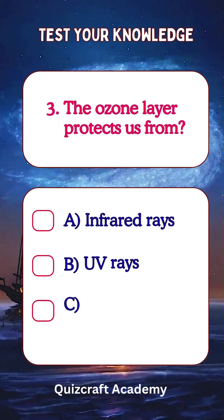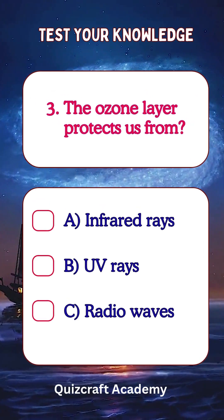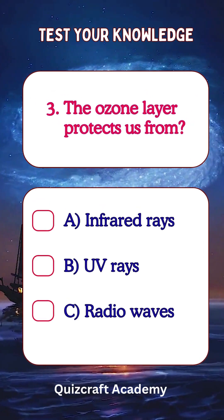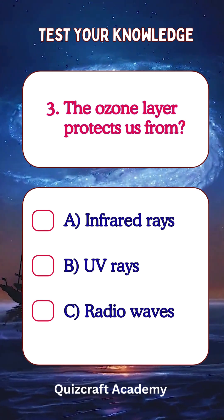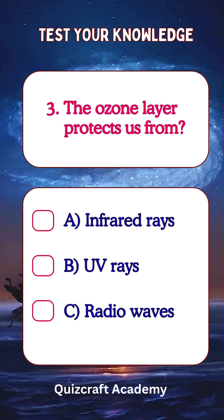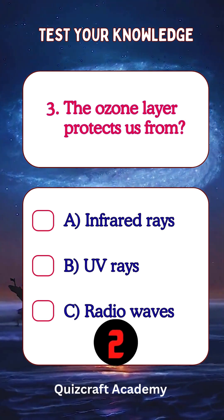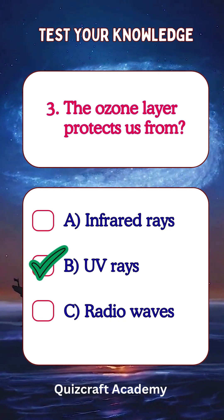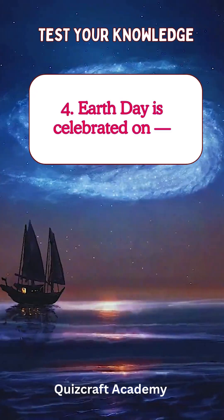The ozone layer protects us from: a. infrared rays, b. UV rays, c. radio waves. Answer: UV rays.